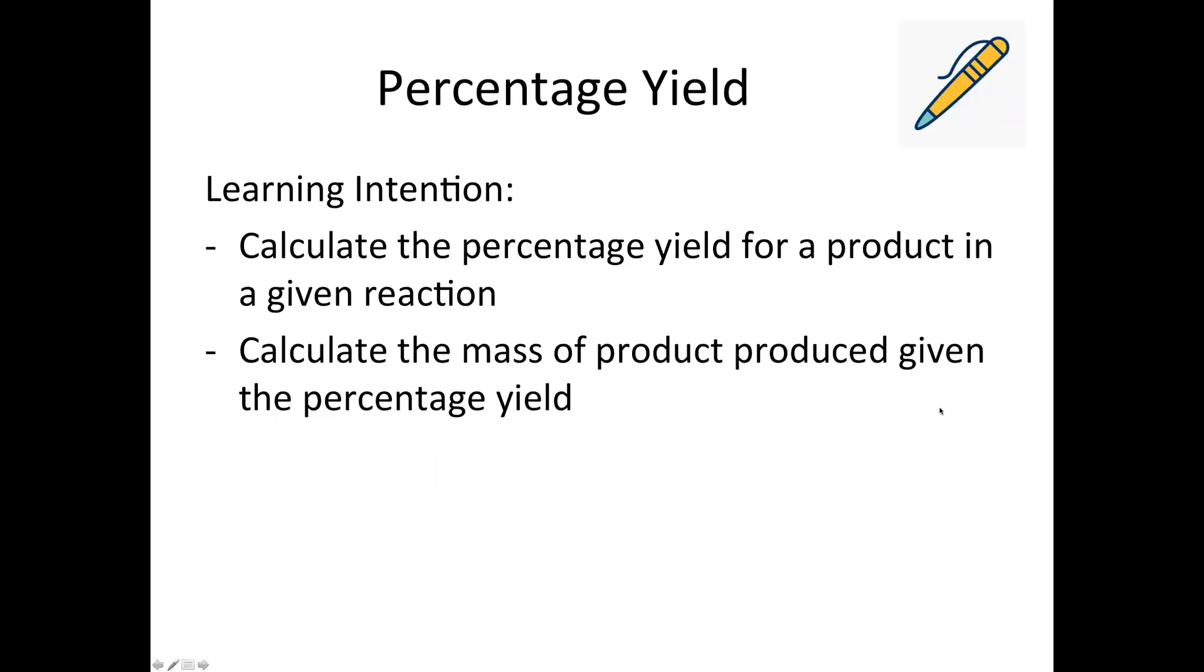So the purpose of this video is to show you how to first calculate the percentage yield of a product in a given reaction using some SQA past paper examples and then there will be a couple examples where we're calculating the mass of product produced when given the percentage yield.